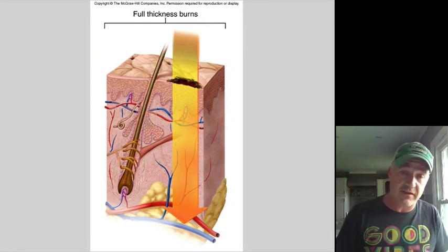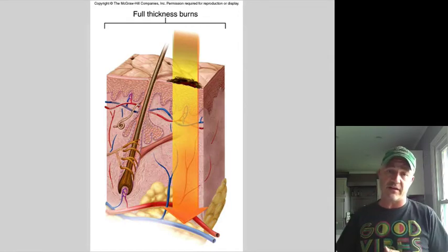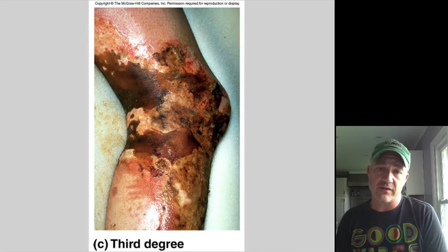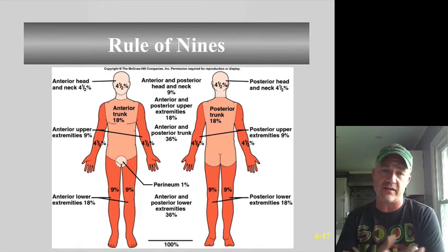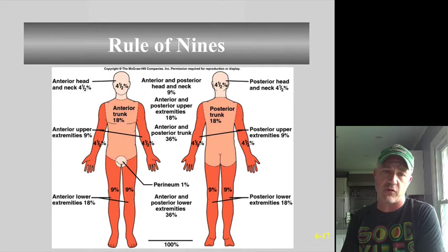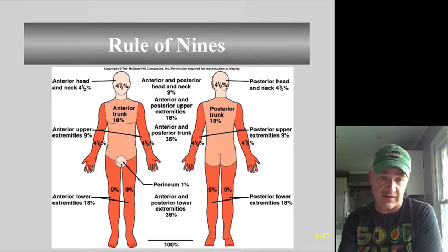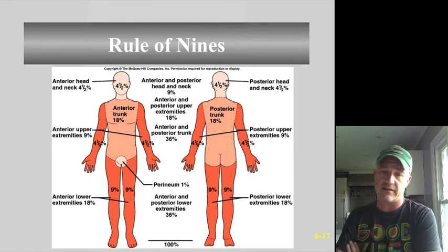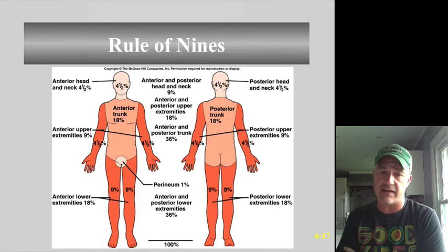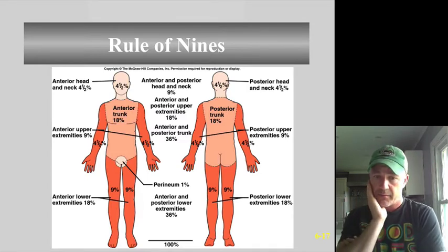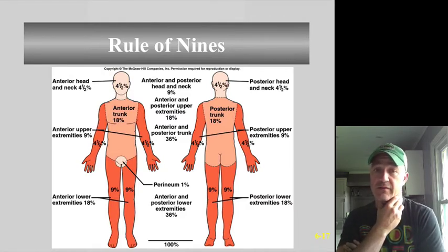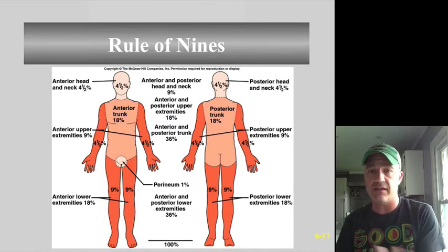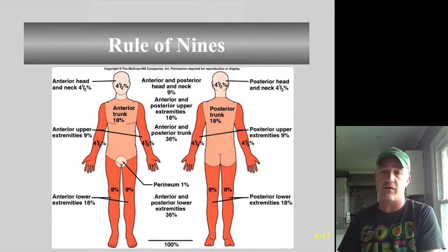When estimating how much of the body has been burned, clinicians use the Rule of Nines. Every limb or body region accounts for some multiple or divisor of nine percent of total body surface area. For example, each arm is nine percent — four and a half for the front, four and a half for the back — and each leg front and back is nine percent. These all add up to ninety-nine percent, with the remaining one percent being the perineal area.